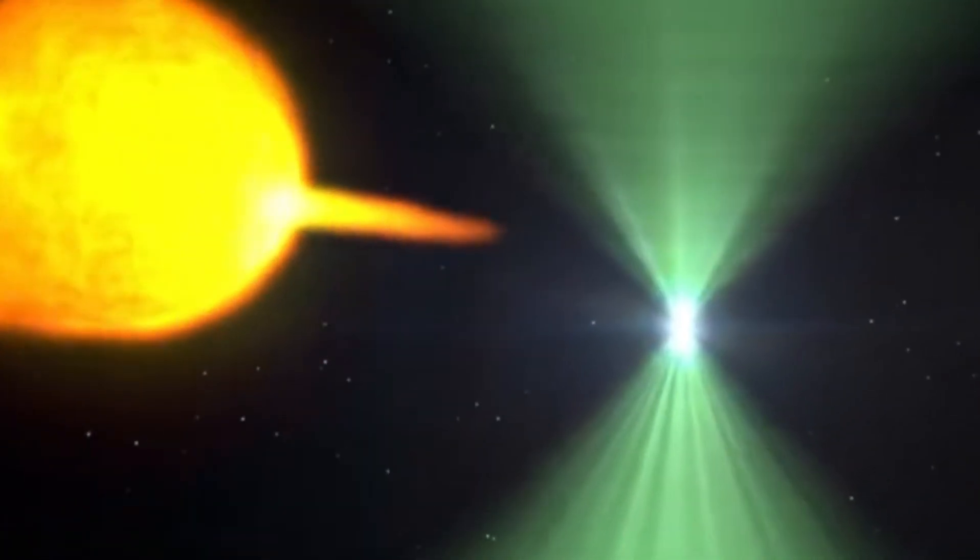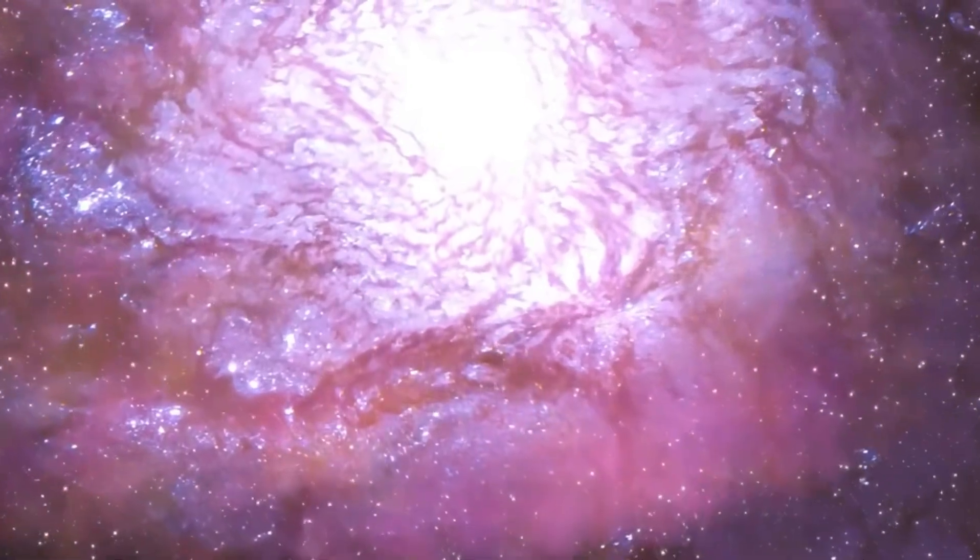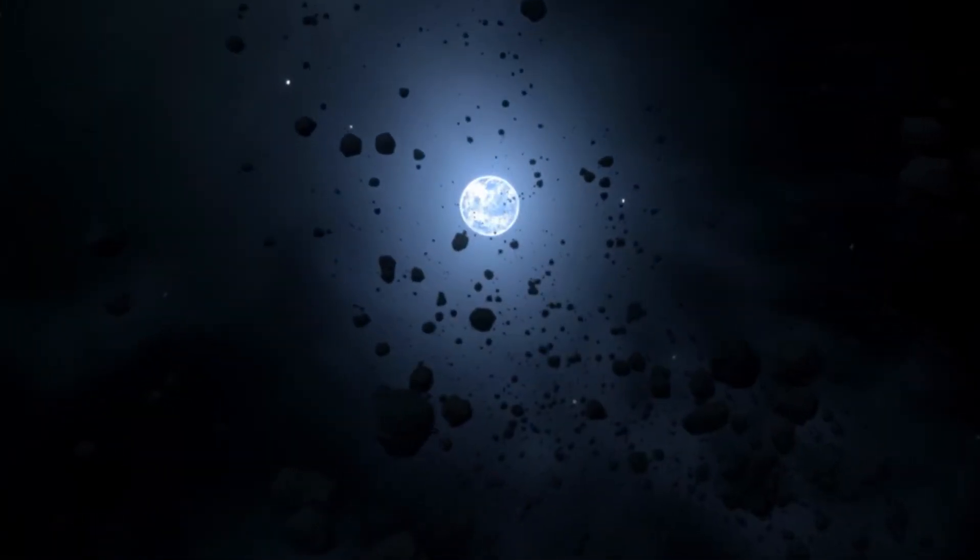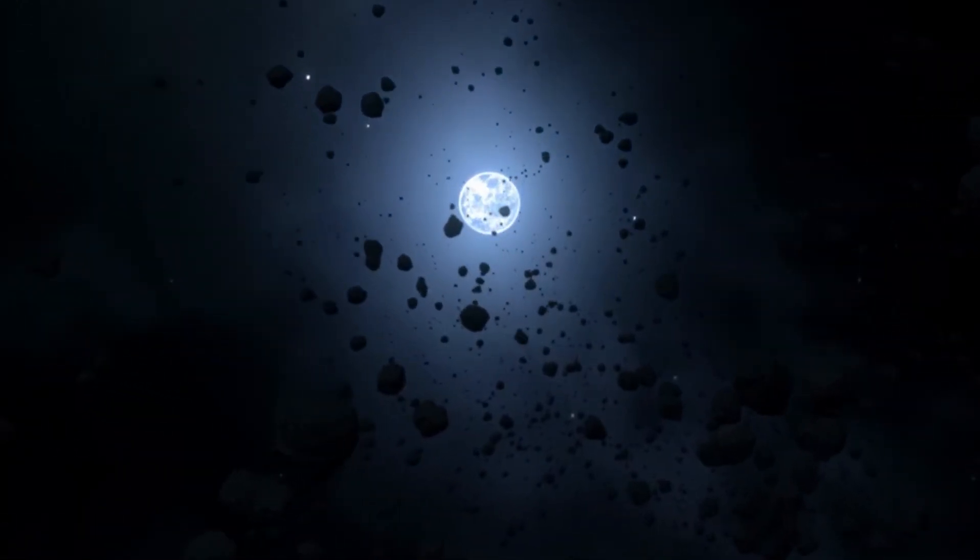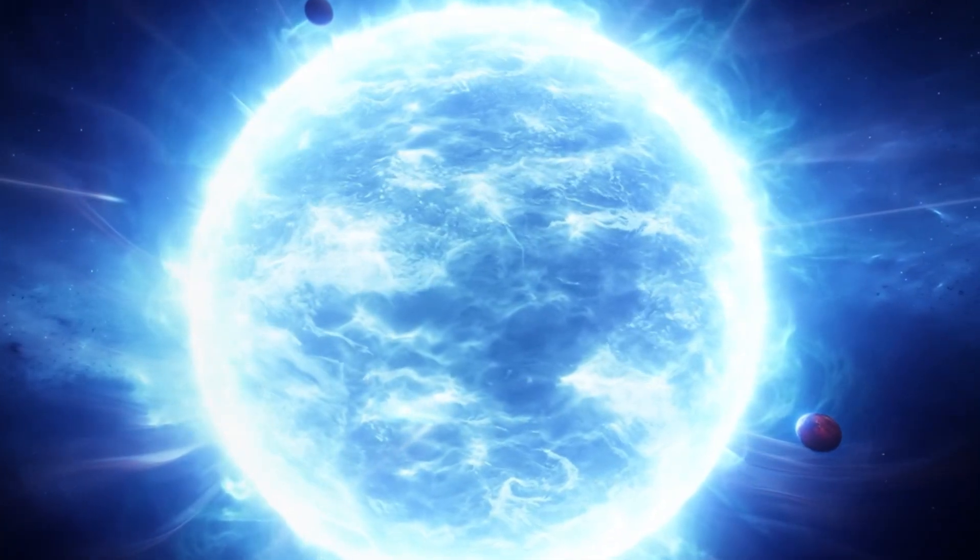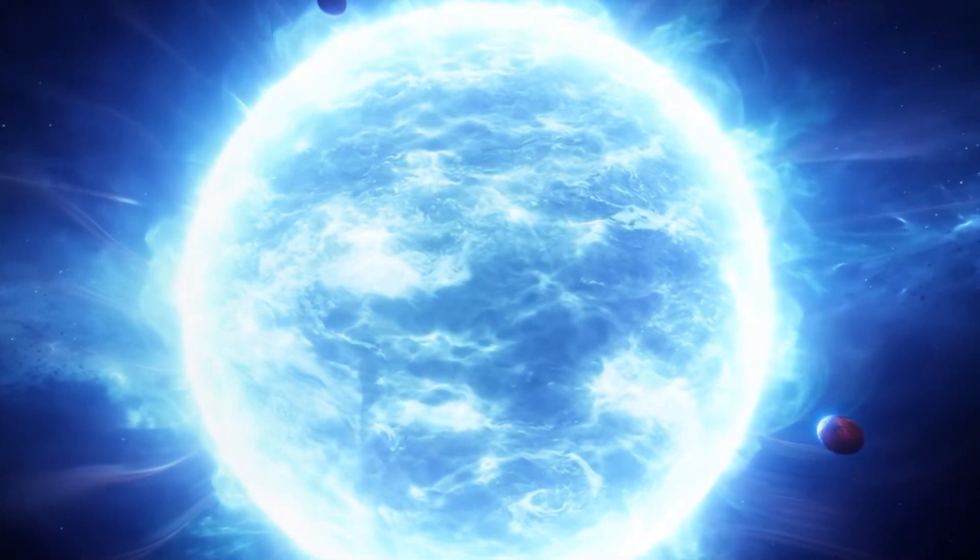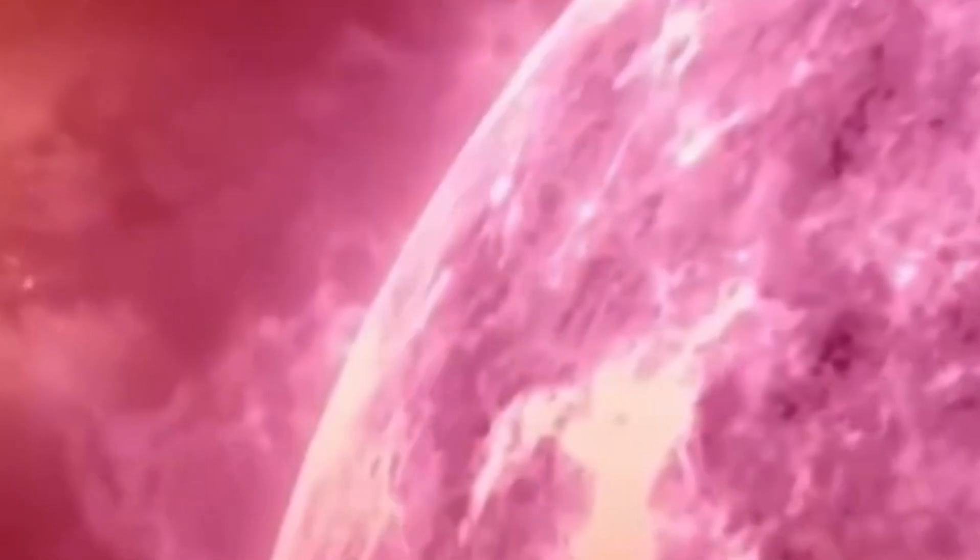If Betelgeuse were to go supernova, the event would not go unnoticed. It would be visible on Earth, potentially even during daylight hours, casting shadows akin to the moon. The aftermath of such an explosion would leave an indelible mark on our planet, with signs and effects lasting for weeks or more.